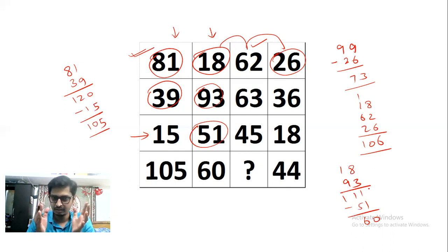So the same structure will continue for the third column also. So it is 62 plus 63. We get 125. Now subtract 45 from it. You get 80. So the answer for this question mark is 80.